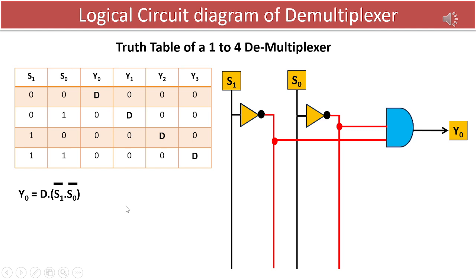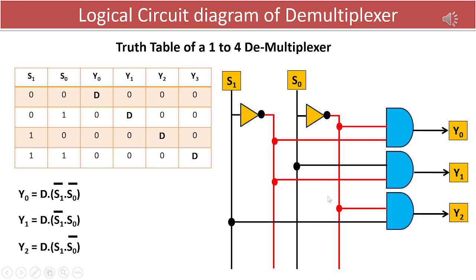To implement the min term Y1, we need the second 3 input AND logic gate, one of the input will get connected to s1 bar and another to s0. To implement the min term Y2, we need the third 3 input AND logic gate, one of the input will get connected to s1 and another to s0 bar.